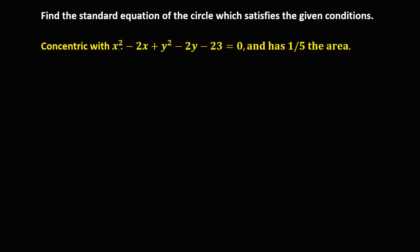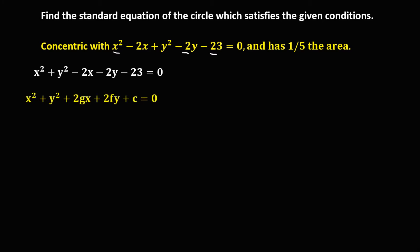From this given equation of a circle, we first need to rewrite it as x squared plus y squared, then negative 2x, negative 2y, and negative 23 equals 0. Then using this equation where the center is negative g and negative f.